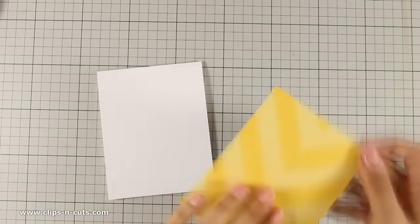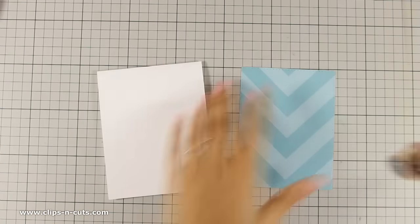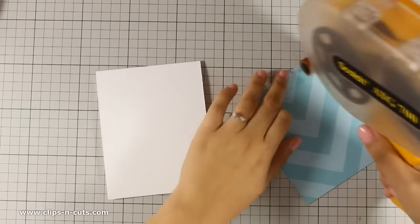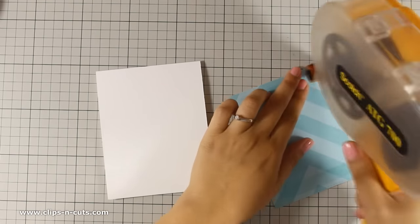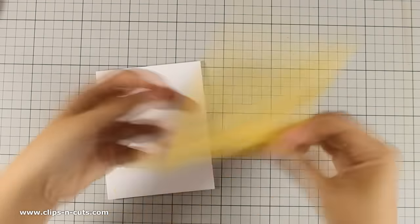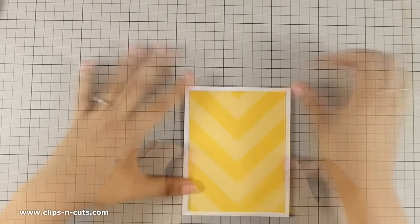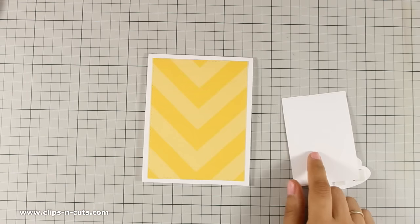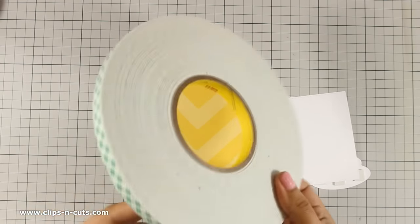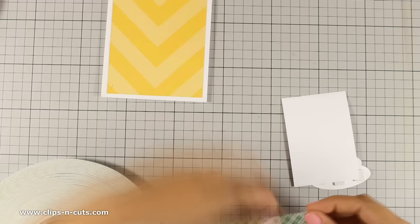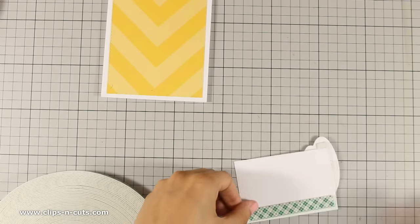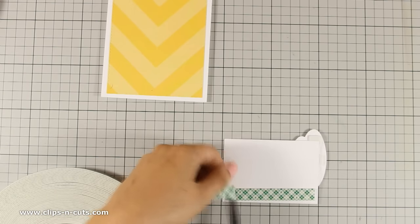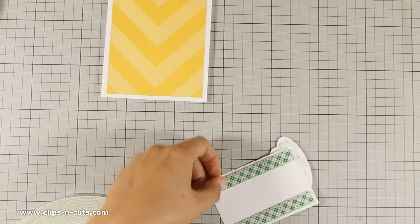And now my panel is slightly smaller than my card base. I am using my tape adhesive at the back, this is my ATG gun and I am going to stick it at the center of my card base. So I have a nice white border all around. Now I am going to stick my focal point at the center of the card by using some foam tape at the back and this will add just a little bit of dimension.